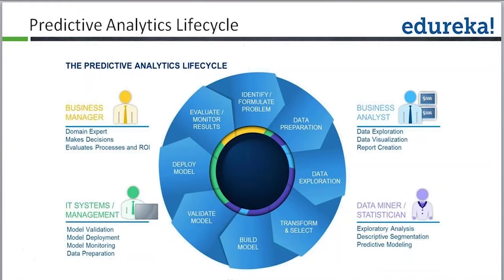Method of model validation: if you have 100 records, you build the model on 70 records and use the remaining 30 to test the performance of the model.